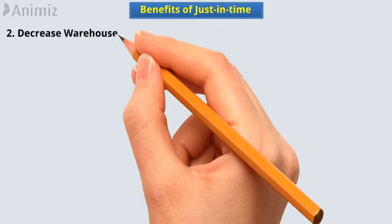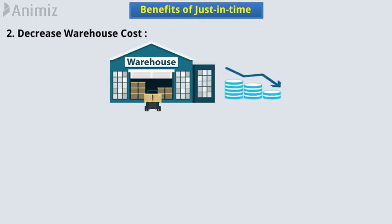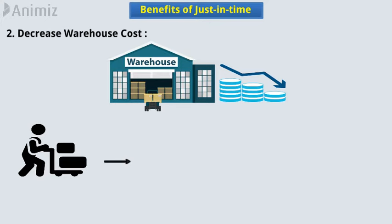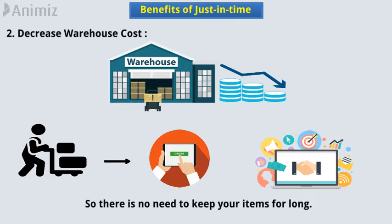2. Decrease warehouse cost. In a Just-in-Time method, the warehouse holding costs are minimized. Because you order only when your customer places an order, your item is already marketed before it reaches you, so there is no need to keep your items for long.